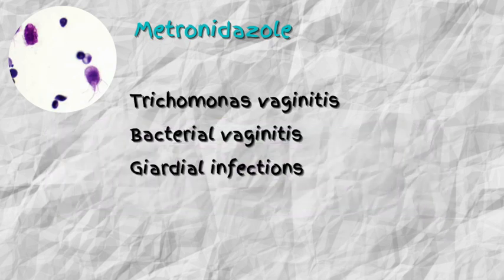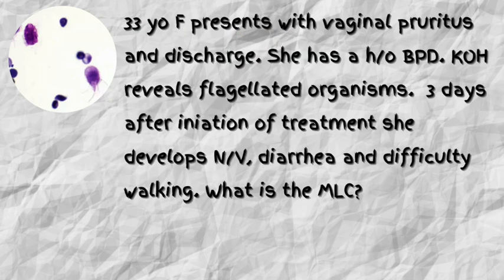Now let's move on to another question. A 33-year-old female presents with vaginal pruritus and discharge. She has a history of bipolar disorder. Potassium hydroxide prep reveals flagellated organisms. Three days after initiation of treatment, she develops nausea, vomiting, diarrhea, and difficulty walking. What is the most likely cause of this patient's symptoms?